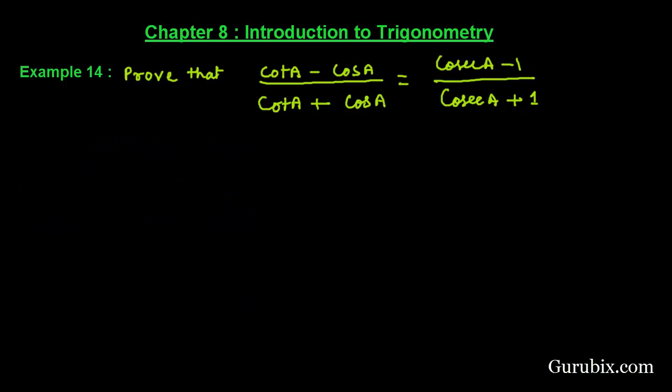Welcome friends, let us solve example number 14 of chapter 8. The example says: prove that (cot a minus cos a) over (cot a plus cos a) is equal to (cos a minus 1) over (cos a plus 1). Let us see how to prove this identity. We shall start with the left hand side.